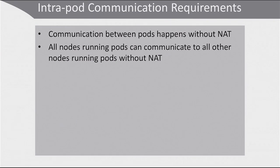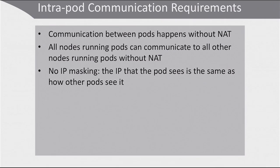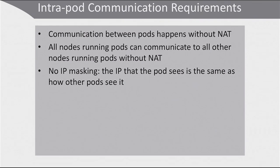Nowhere in your network setup can you have NAT address translation, with the exception of the traffic that is coming into the pod. So there is no IP masking, and the IP that the pod sees is the same as how other pods see it. This also means that there are specific challenges running Kubernetes networking in cloud environments, because in a cloud environment, typically the IP that the cloud instance sees is not the same as the IP how other pods see it.